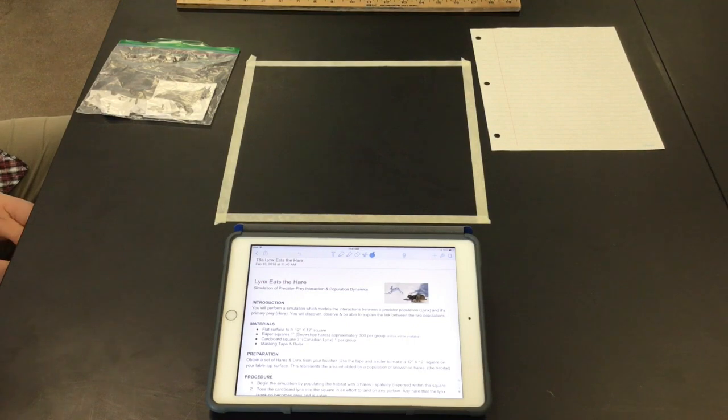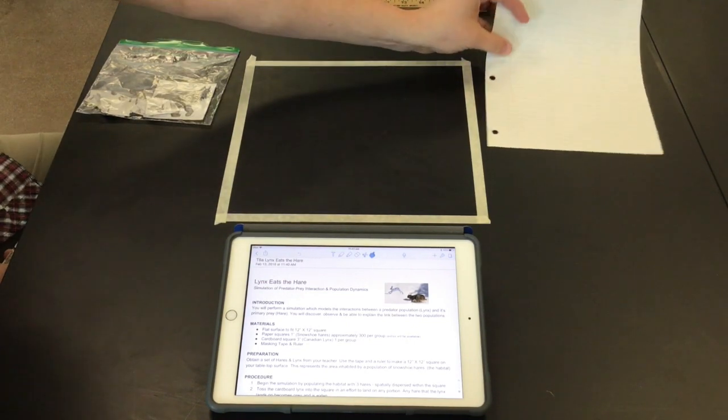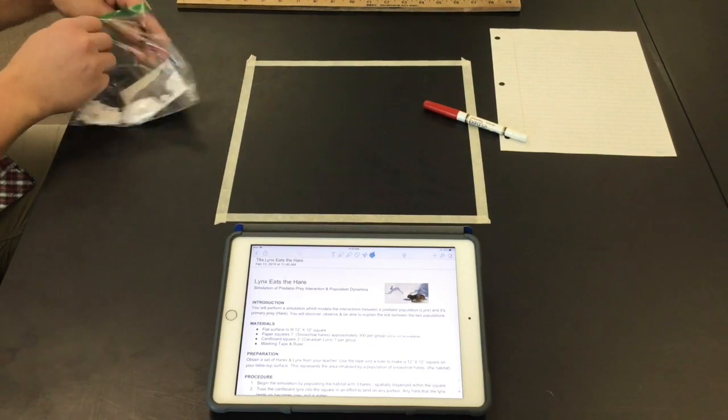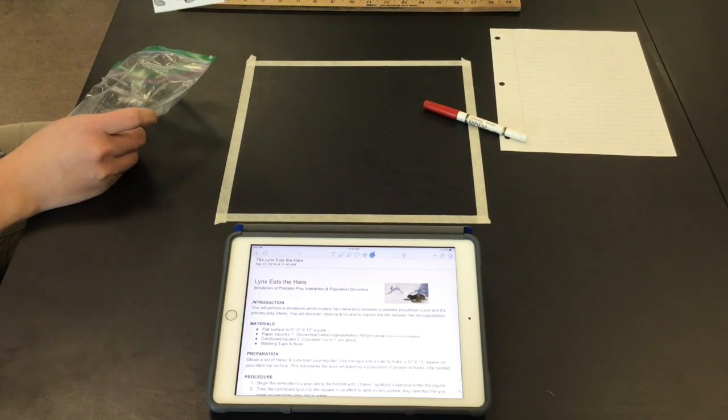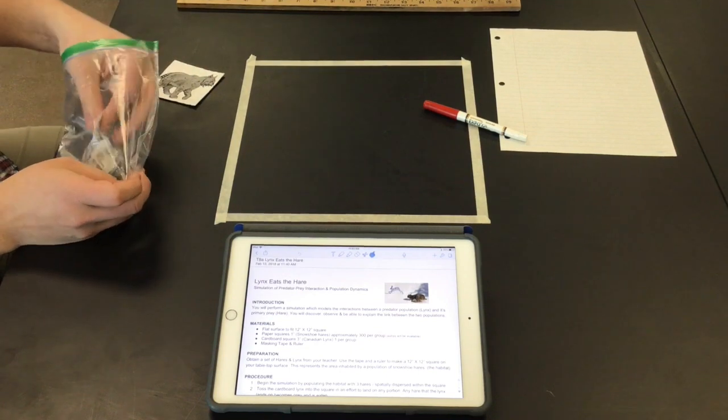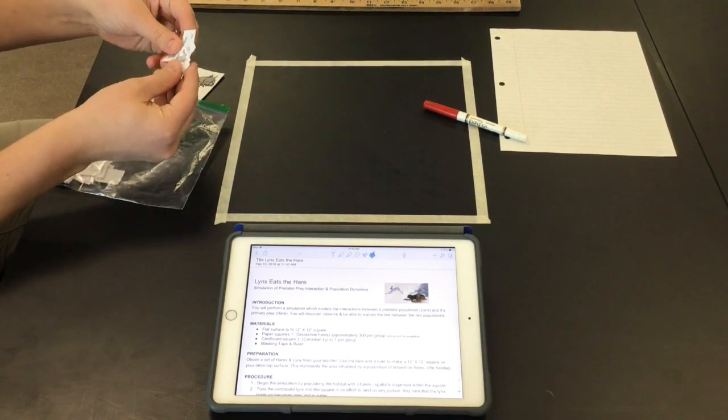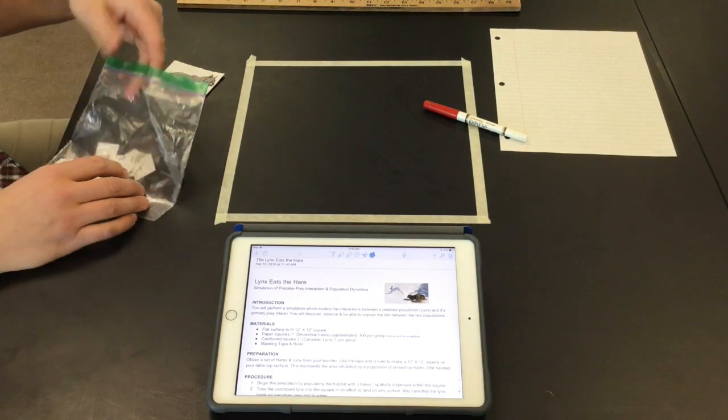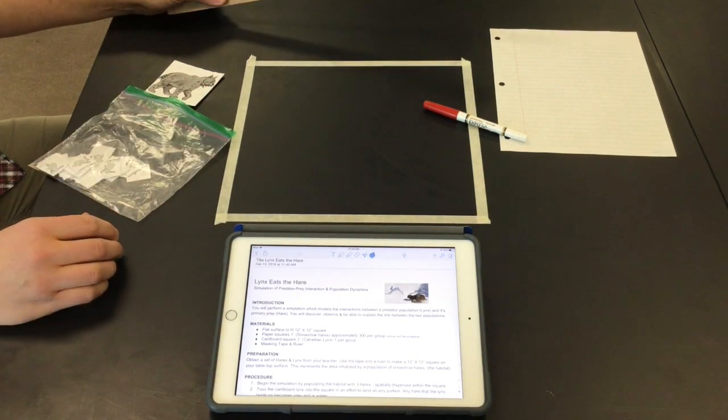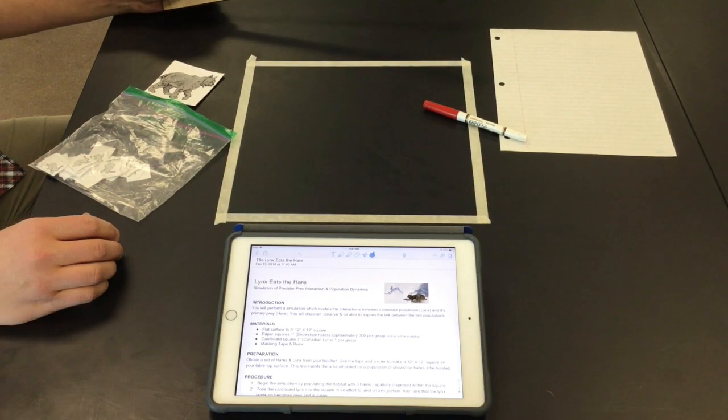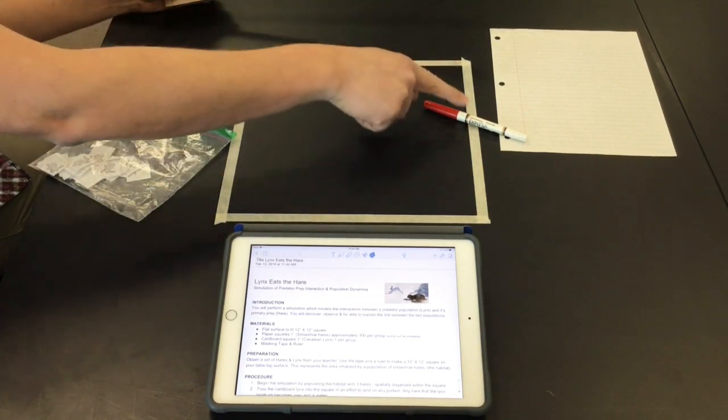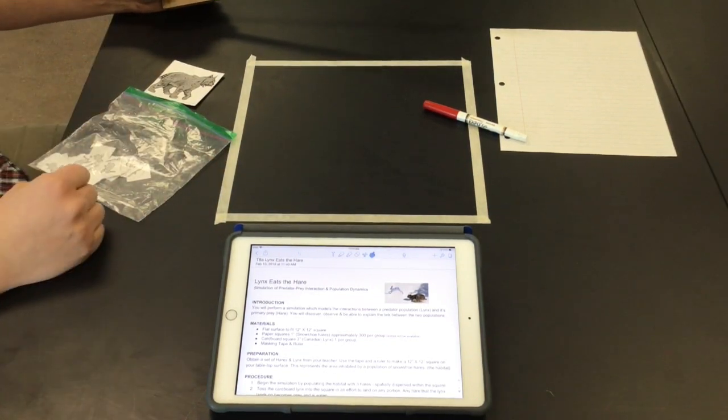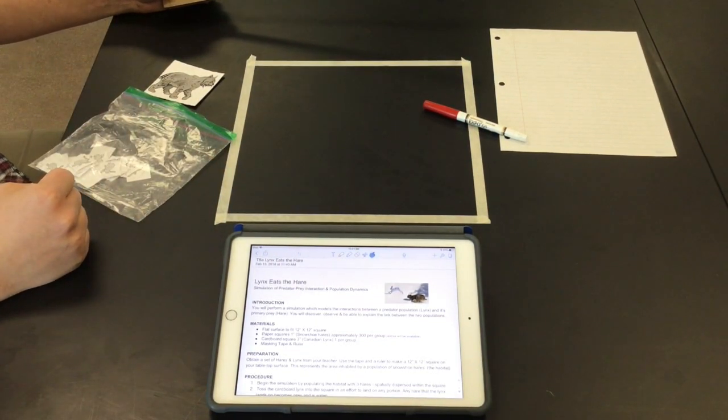A few items that you'll need for this lab. You'll need a scratch piece of paper, something to write with. You'll need one baggie of our lynx and a certain number of snowshoe hares which you might have to come get extras if you don't have enough. We'll have some of those supplied in front of the room for you. You may need a ruler measuring in inches and you have to have some tape to measure out a 1 foot by 1 foot or 12 inch by 12 inch square area that's going to represent the habitat for this lab.